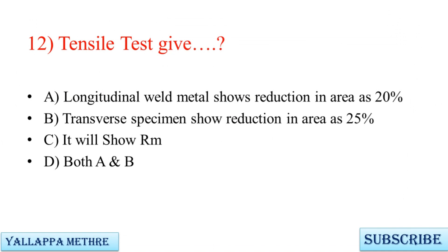Question 12: The tensile test gives — A. Longitudinal weld metal shows reduction in area of 20%. B. Transverse specimen shows reduction in area of 25%. C. It will show UTS. D. Both A and B.